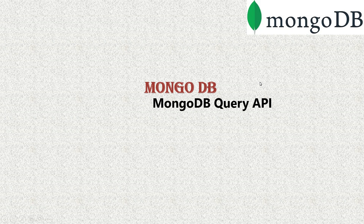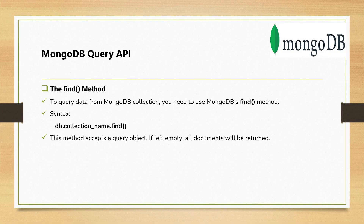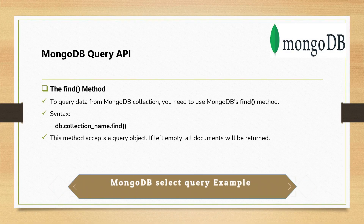Welcome to the MongoDB video series. In this tutorial we are going to discuss MongoDB Query APIs. Once you insert data into a MongoDB database, the next thing you would like to do is select data based on different criteria. MongoDB provides query APIs for this. The first method is called find — to query a MongoDB collection you can use the find method.